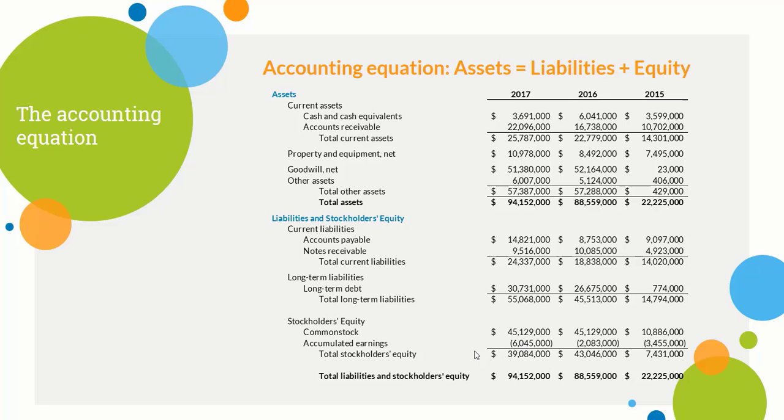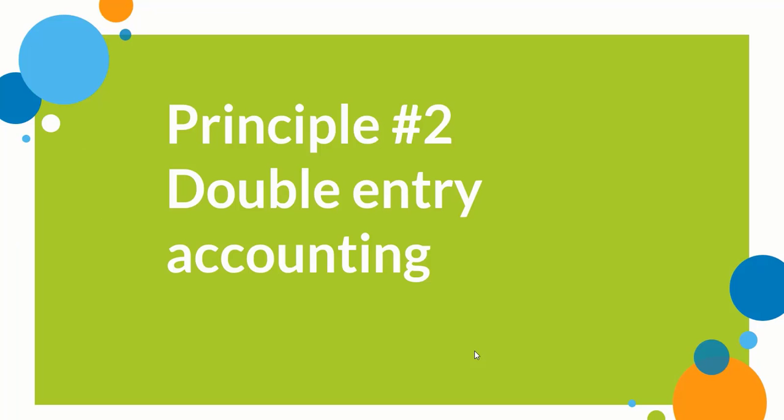Assets equal liabilities plus equity — it's always true. If it's not true, that means something is wrong and you need to go back and fix your model. Assets must always equal liabilities plus equity. That's the very first fundamental thing you need to know about financial statements.